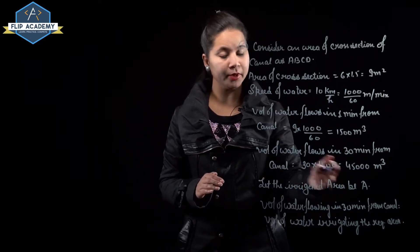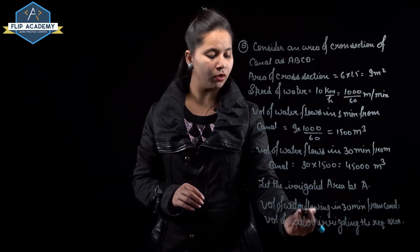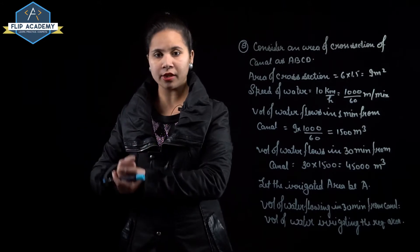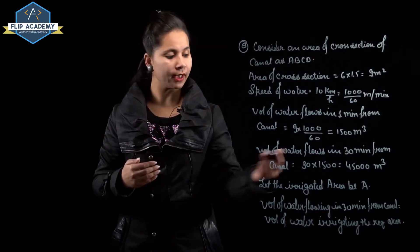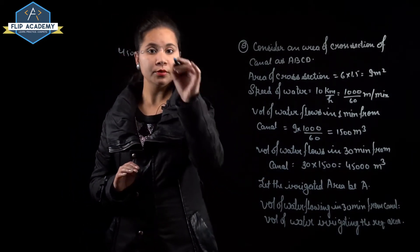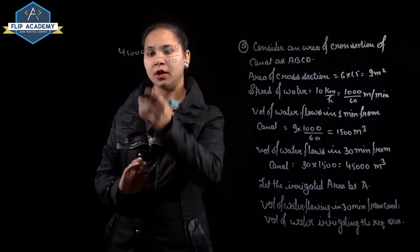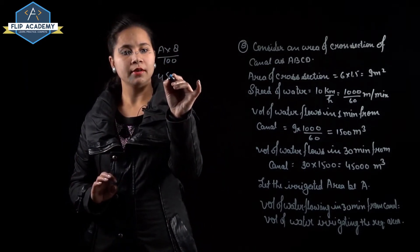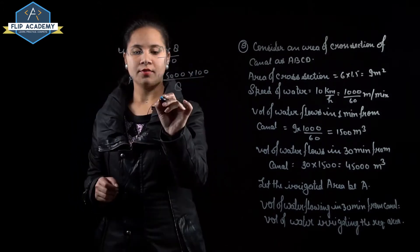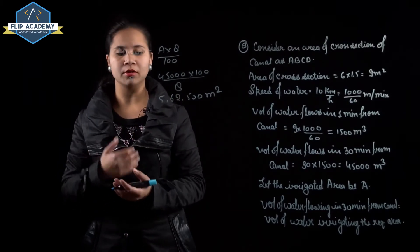Assume irrigated area = A. Volume of water flowing in 30 minutes from canal equals the volume of water irrigating the required area. So 45,000 = A × (8/100). Therefore A = 45,000 × 100/8 = 5,62,500 m². Question number 8 is complete.